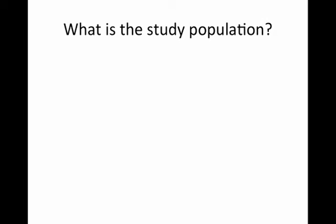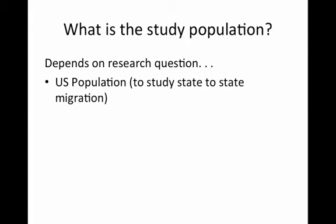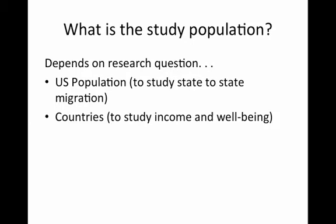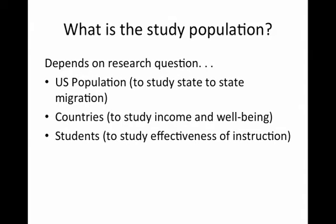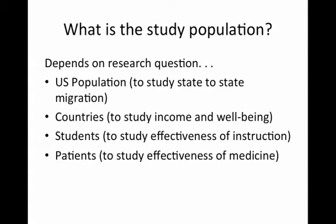Sample selection. For sample selection, you need to think about what the study population is — it depends on the research question. It might be the U.S. population if you're studying state-to-state migration. It might be countries if you're studying income and well-being, which you are. It might be students if you're studying the effectiveness of instruction, or patients if you're studying the effectiveness of medicine.